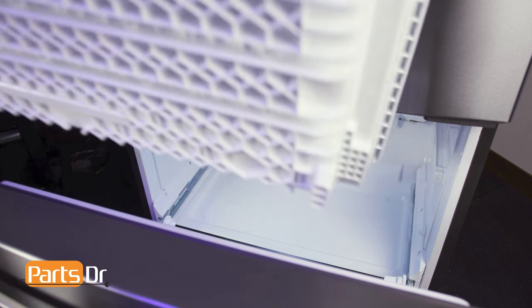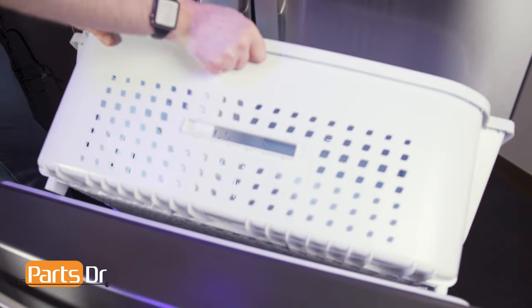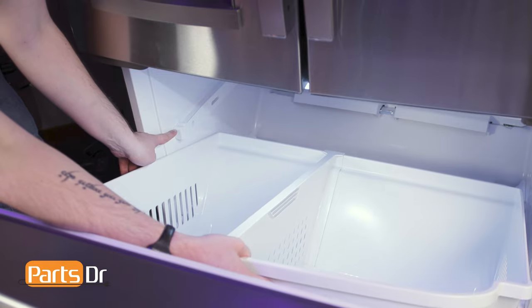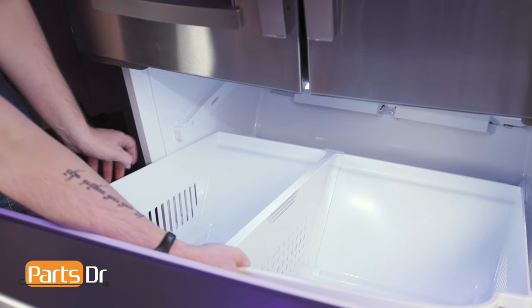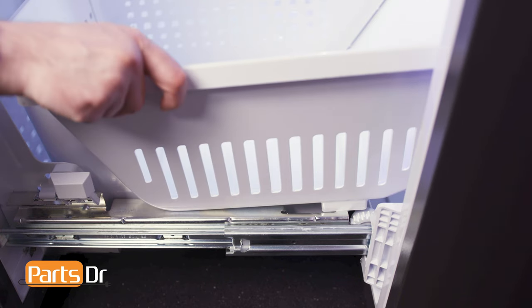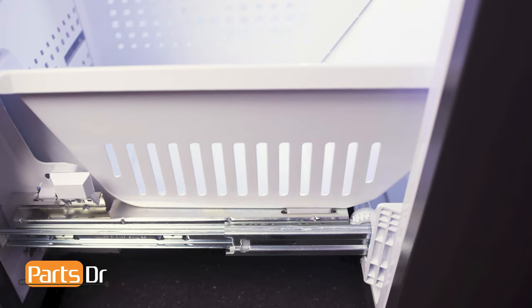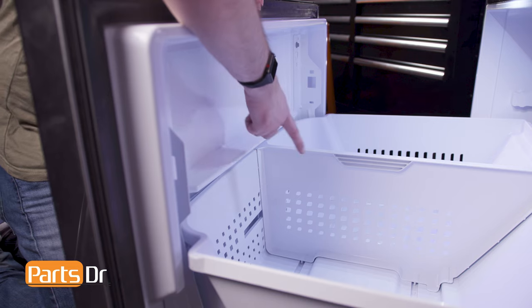To install the lower drawer, insert it at an angle, making sure it sits beneath the support glide rail. Then pull the drawer forward so that the tabs align with the retainers on the slide rails. Make sure that the front of the basket is beneath the lip.